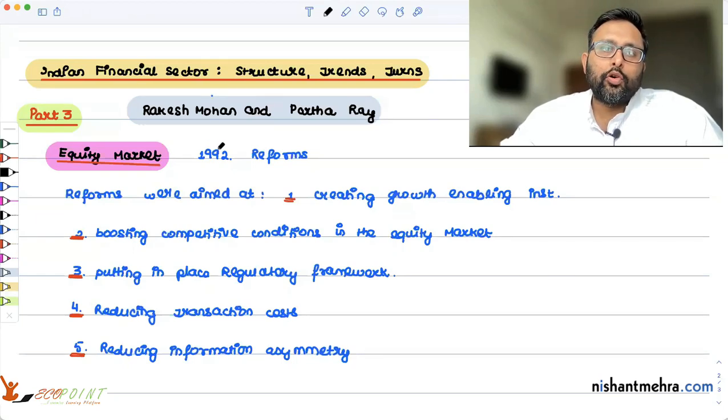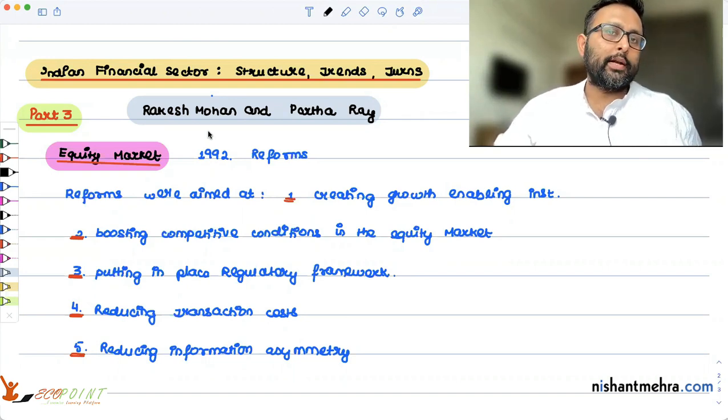Let us take the discussion further on Rakesh Mohan and Parkhari's article on Indian financial structure. We've already talked about within capital markets, debt or bond market. Now let's discuss equity market. So they say that reforms started in the market in 1992.